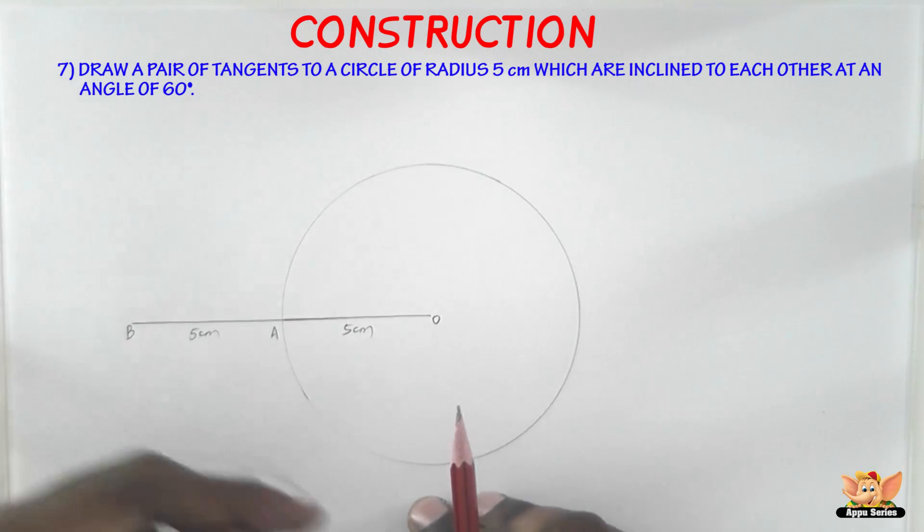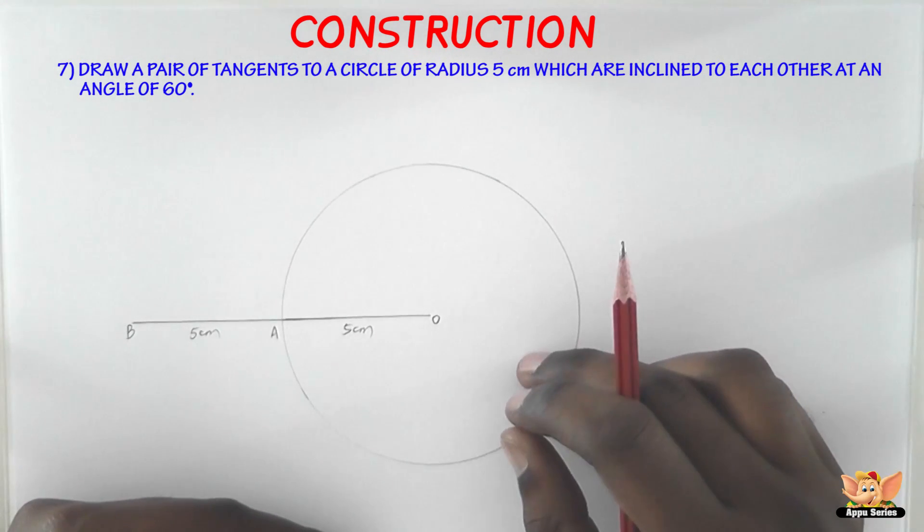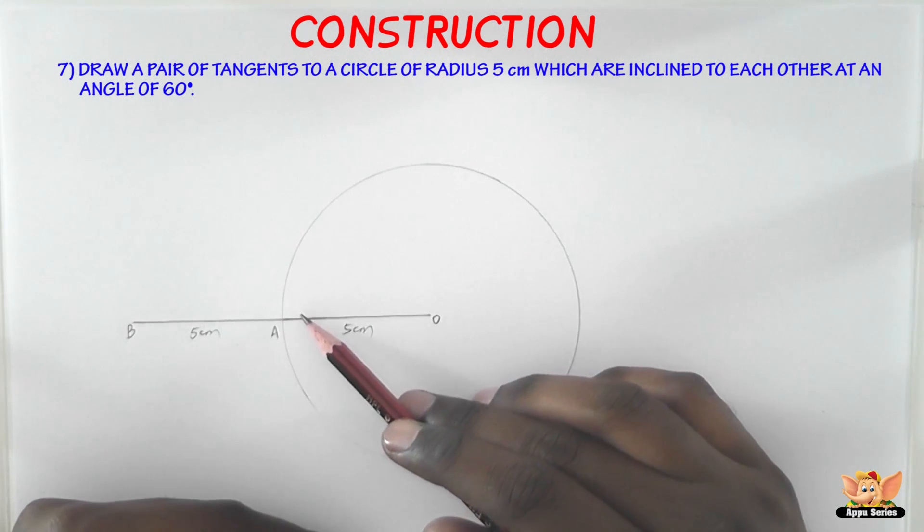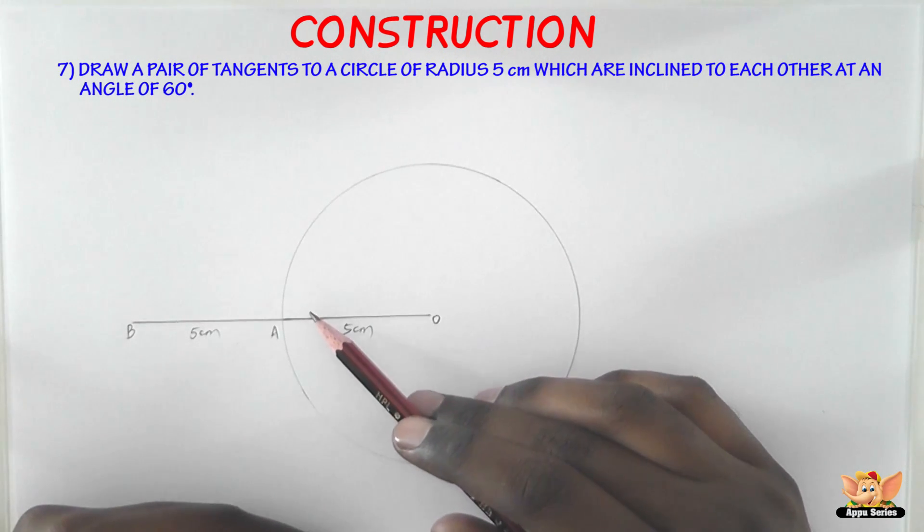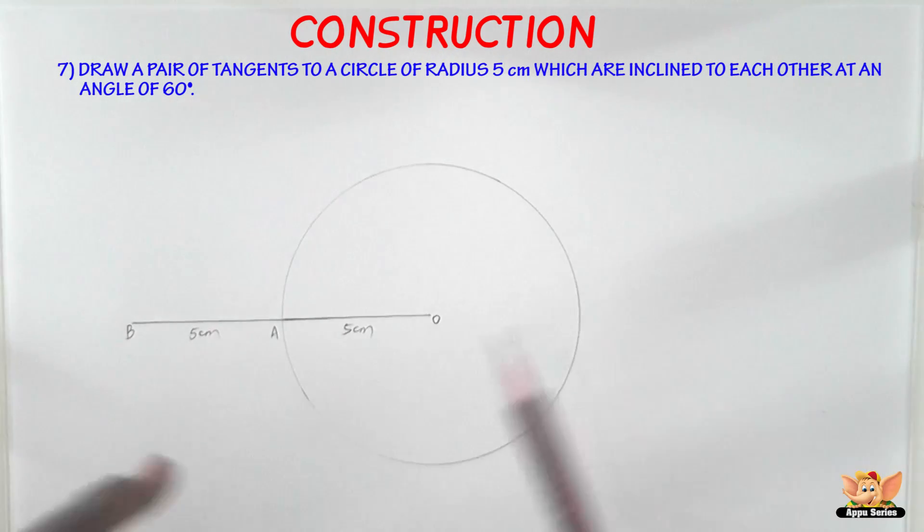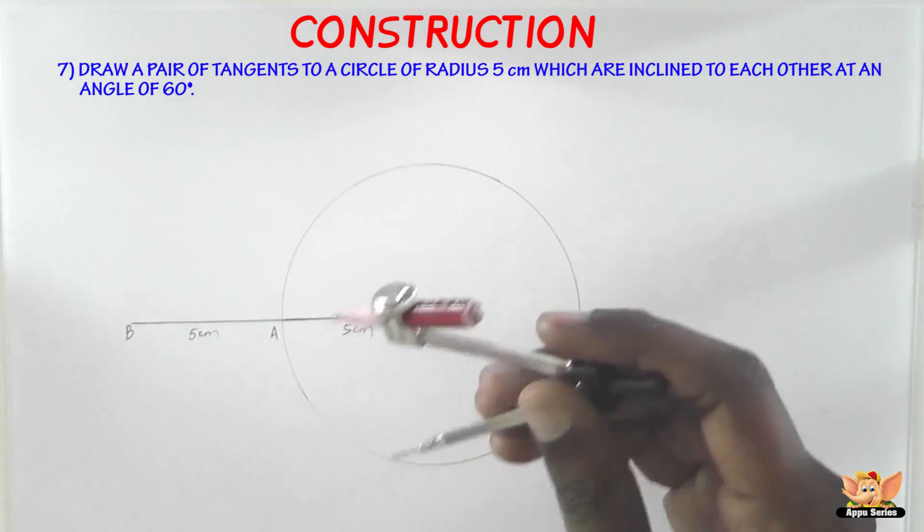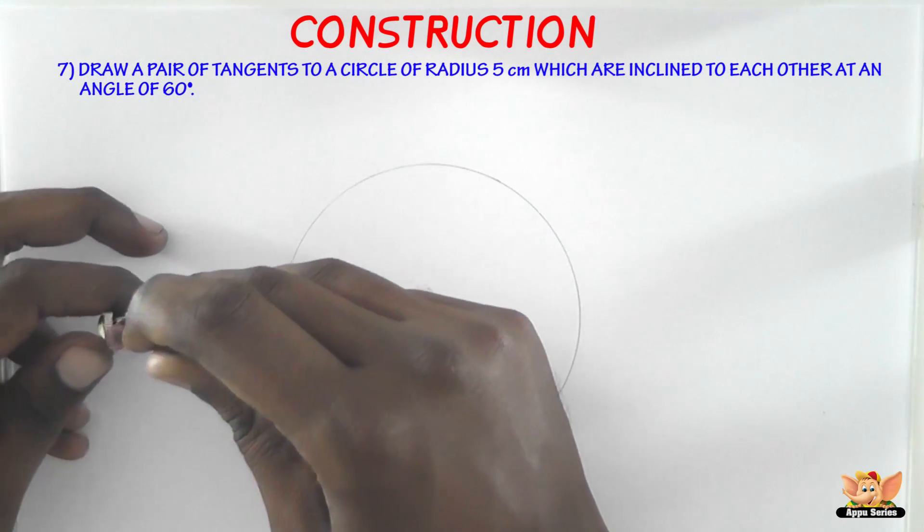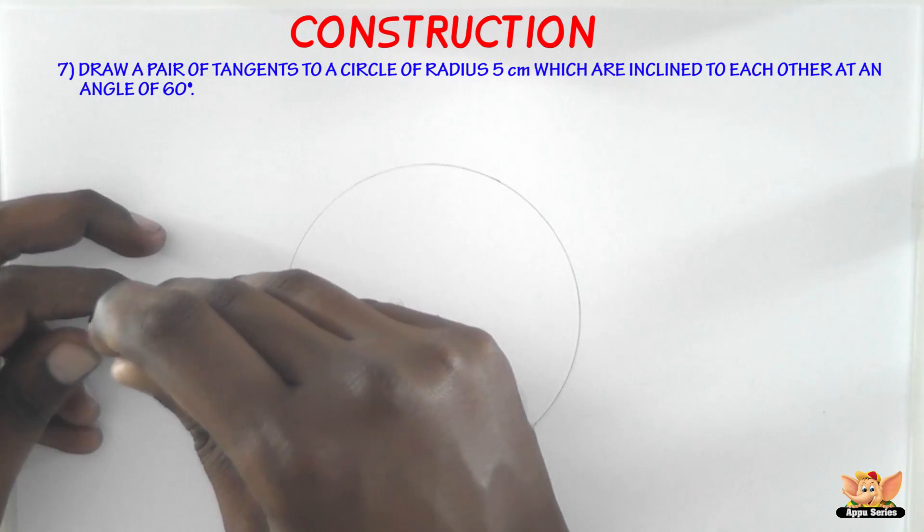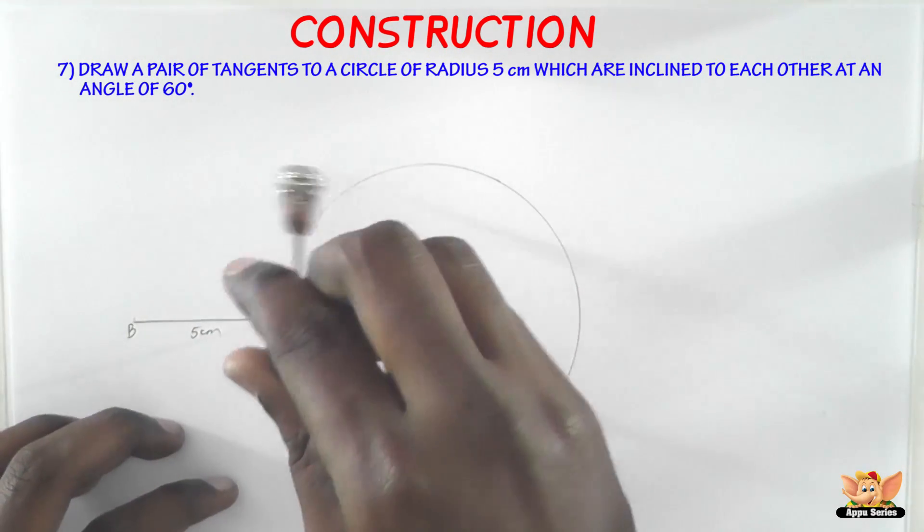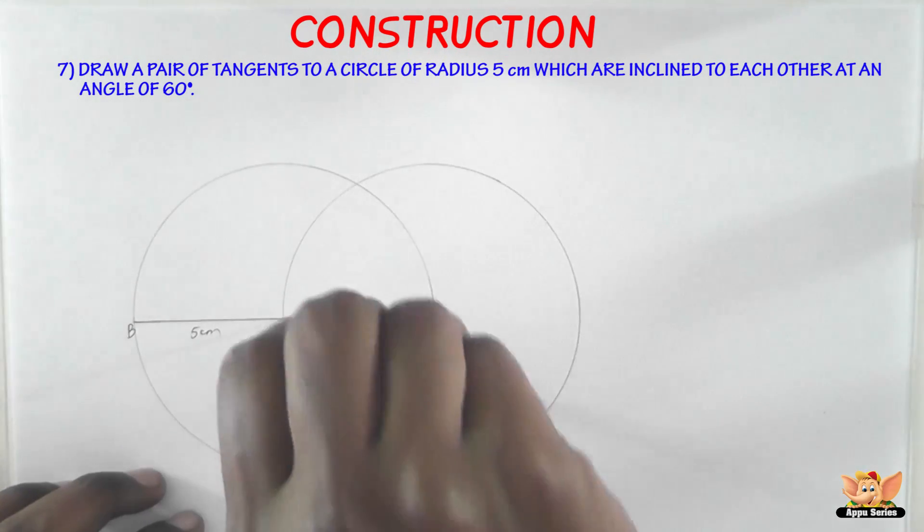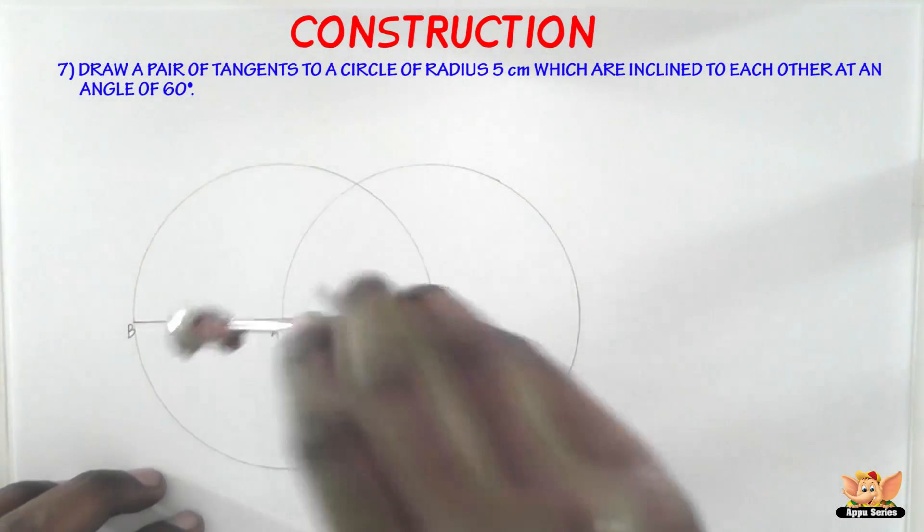The next step is: taking A as the center, draw a circle of radius 5 centimeters. So taking A as the center, draw a circle of radius AB or OB.